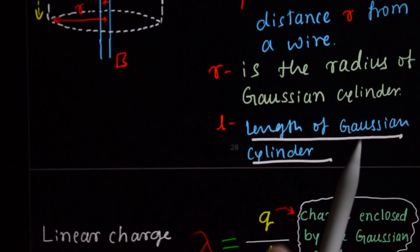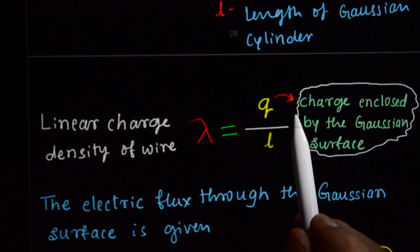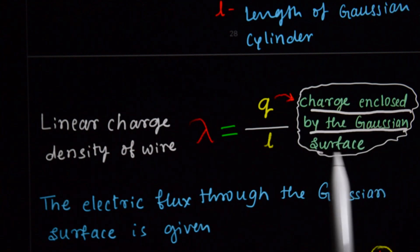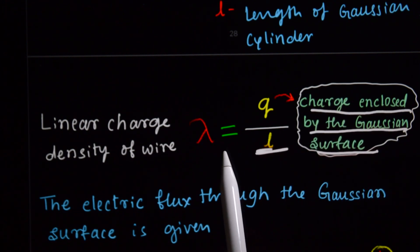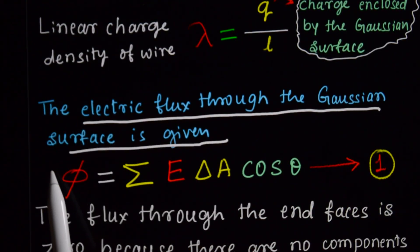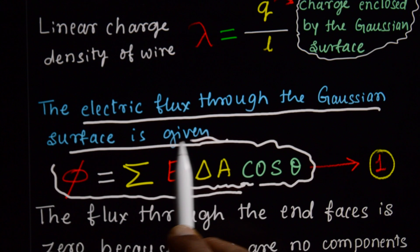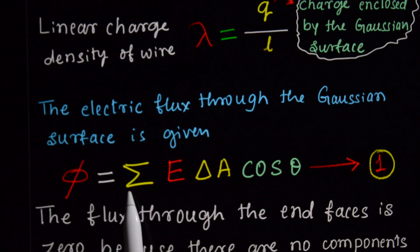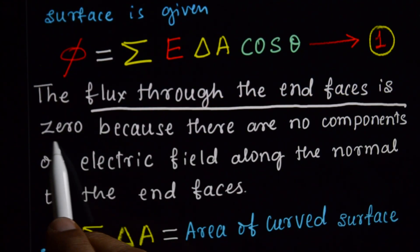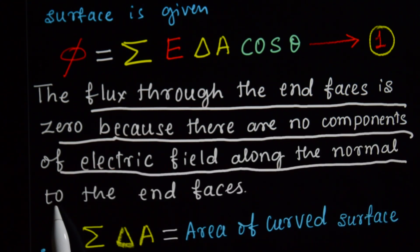The linear charge density of the wire is λ = Q/L, so the charge enclosed by the Gaussian surface is Q = λL. The electric flux through the Gaussian surface is given by: flux = summation of E·δA·cosθ. The flux through the end faces is zero because there are no components of electric field along the normal to the end faces.